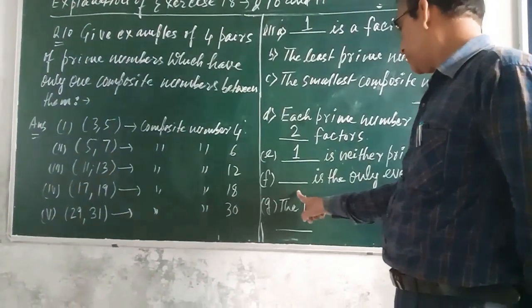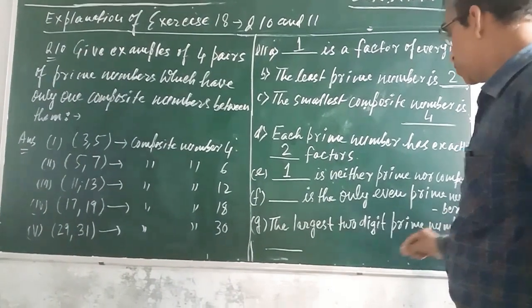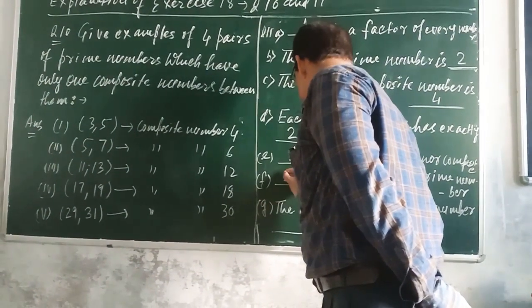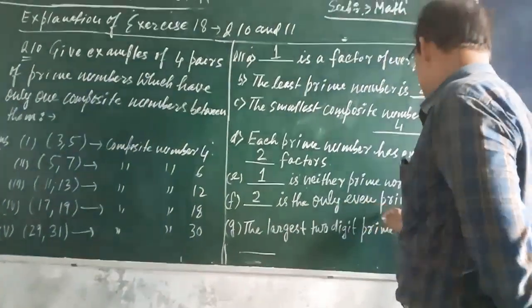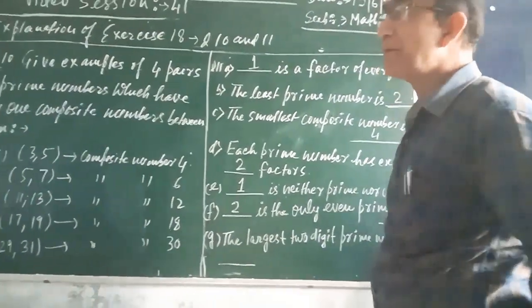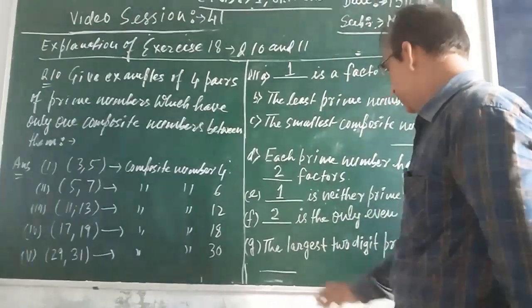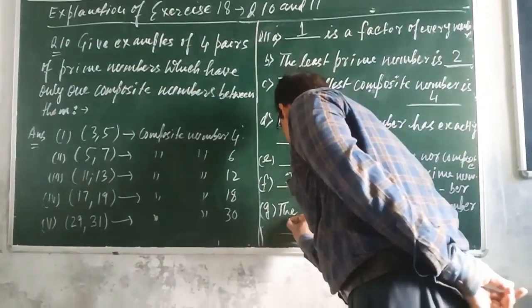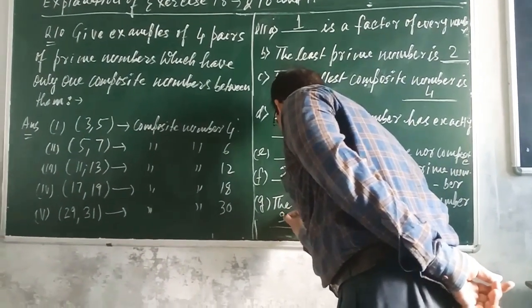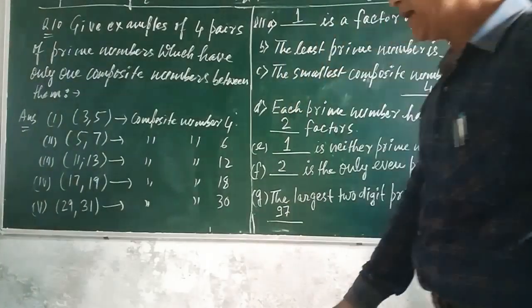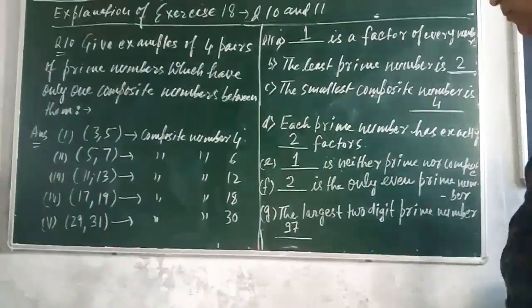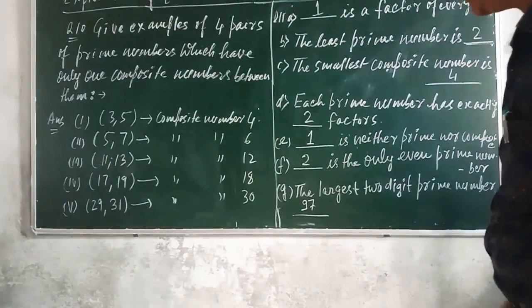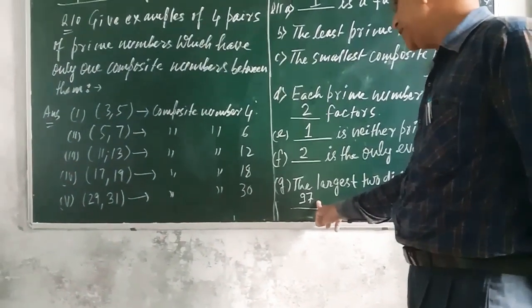Now, the next one: Dash is the only even prime number. The answer is 2. 2 is the only even prime number. 2 is a prime number which is also even. So, 2 is the only even prime number — all other prime numbers are odd. Next: the largest 2-digit prime number is 97. When we made the table of prime numbers between 1 and 100, we found that the largest 2-digit prime number is 97.